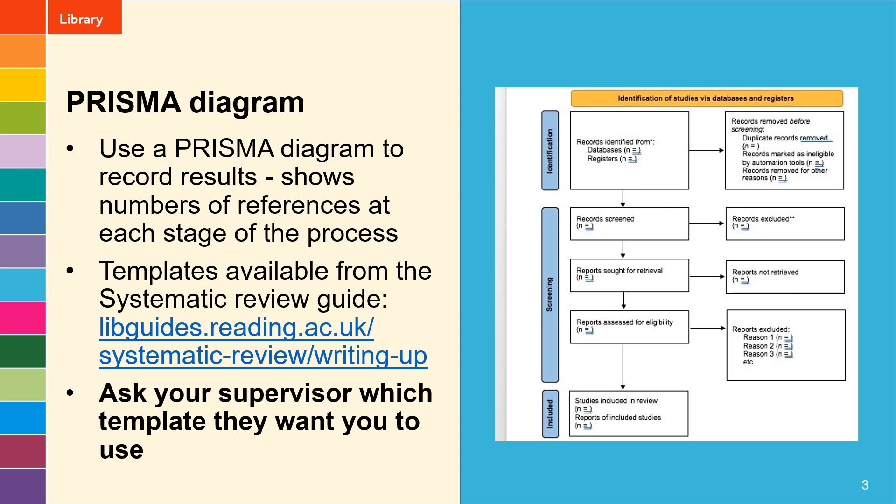Your reports sought for retrieval are the ones in your include group at this stage — those are the ones that you try to get the full text for. Hopefully you're able to get hold of most of the full text reports, so the number that you are able to read in full text would go in the reports assessed for eligibility box. If there were any studies you weren't able to get, you would record the number in the reports not retrieved box on the right of the diagram.